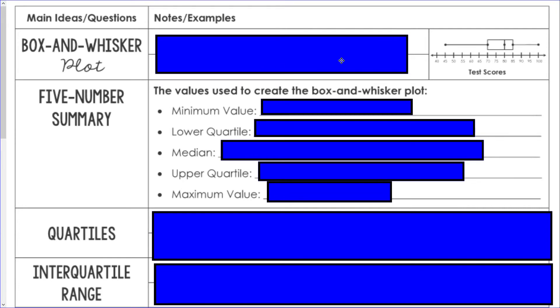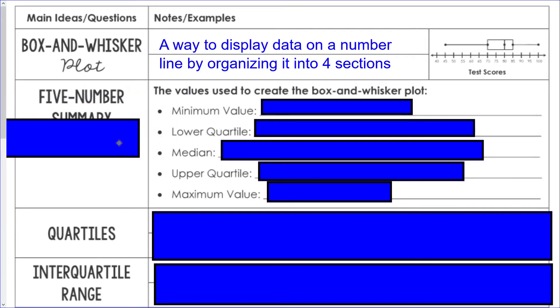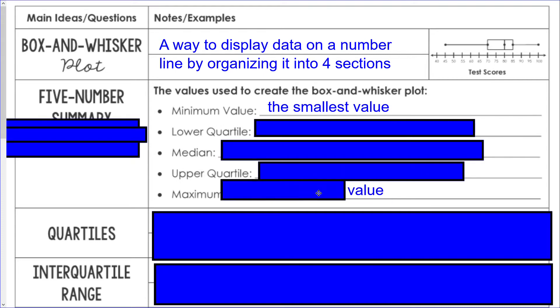A box and whisker plot is a way to display data on a number line by organizing it into four specific sections. These sections are divided up by five points on the number line. The minimum value is the smallest value, and the maximum value would be the largest value.